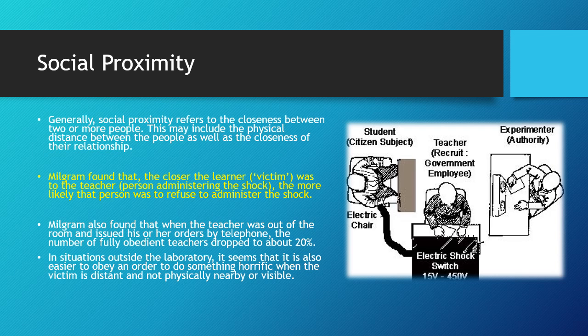Milgram also found that when the teacher was out of the room and issued orders by telephone, the number of fully obedient teachers dropped to about 20%. In situations outside the laboratory, it also seems easy to obey an order to do something horrific when the victim is distant and not physically nearby or visible. That's why there are ethical concerns about drone warfare — if you're not seeing the impact of what you're doing, you're more likely to hurt people.